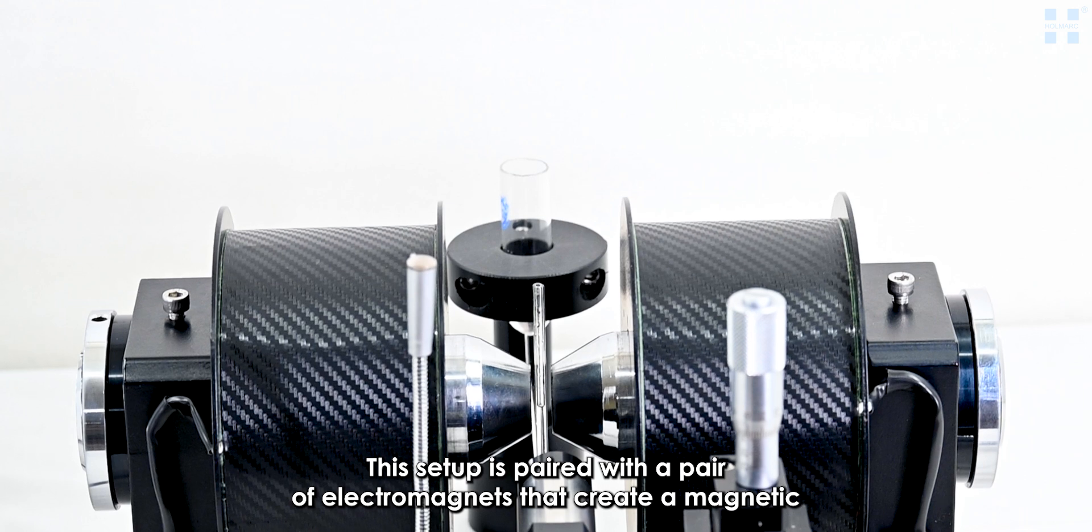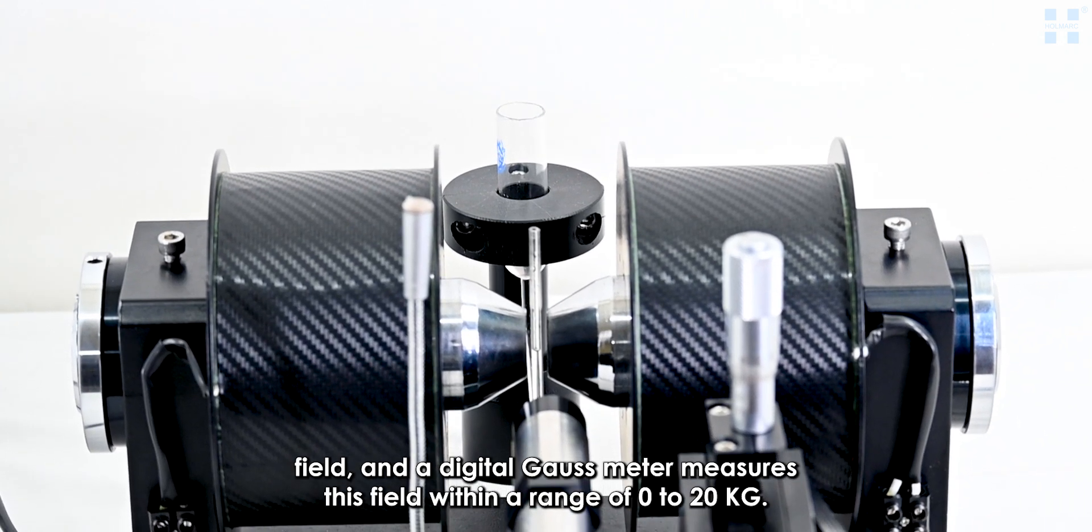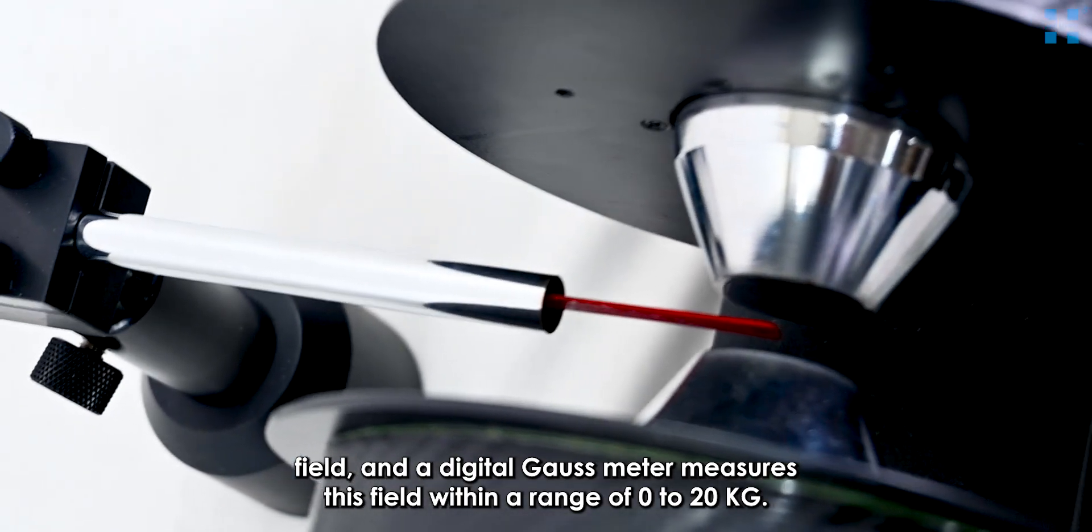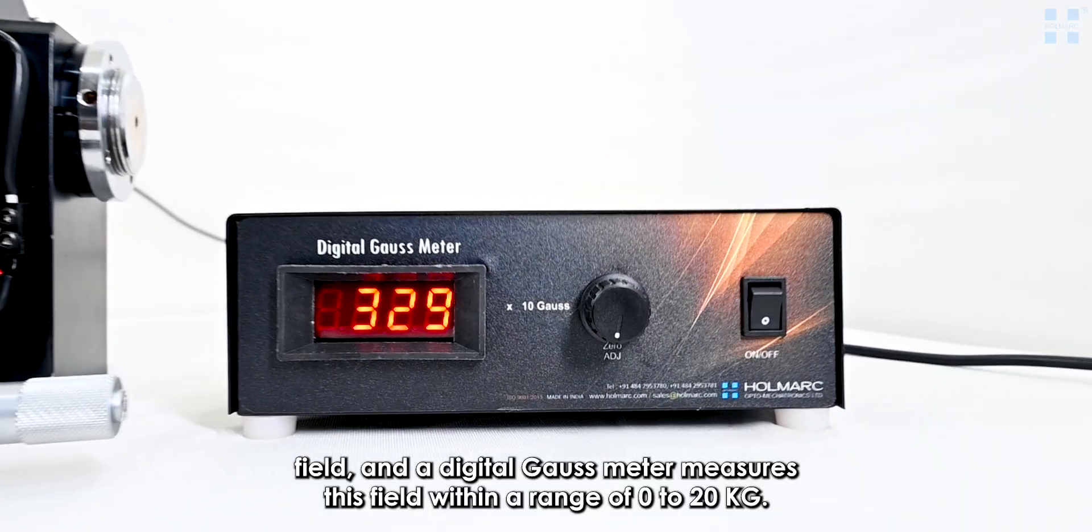This setup is paired with a pair of electromagnets that create a magnetic field, and a digital gauss meter measures this field within a range of 0 to 20 kilo gauss.